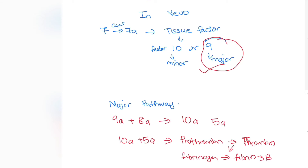The last stage is quite similar to the ending of the in vitro pathway: 10a and 5a activate prothrombin to thrombin, fibrinogen converts to fibrin, and factor 13 gets activated. The key difference in vivo is that factor 7 activates factor 9, and then factors 8 and 9 activate factors 10 and 5.